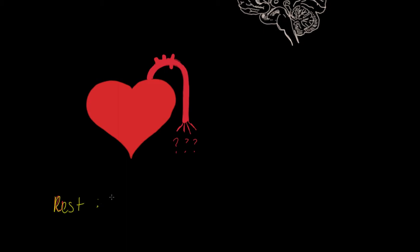At rest, where is this blood going? I want to consider the notion of other organs - being the liver, the kidneys, the skin, the brain. How much of the cardiac output - the stroke volume leaving the heart per minute - is going to these collective organs, other than the muscles? At rest, this is 80 to 85%. If you consider there's about 5 litres of blood at rest, about 4 to 4.25 litres is going to other organs, not the muscles.